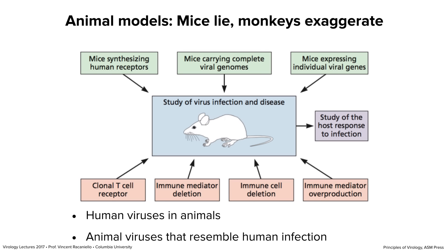Mice are commonly used for studying virus infections. They're relatively small, they're genetically inbred, and you can breed them pretty easily — although if you've ever done animal studies with mice, you know it's not cheap. The husbandry is pretty expensive. Nevertheless, we can use them. There are many things we can do with mice: we can put human receptors for viruses into mice; sometimes that makes them able to be infected. We can put the whole viral genome in a mouse and it won't kill them. We can produce individual viral gene products in mice to see the effect, look at antibody and cellular responses, and introduce clonal T-cell receptors.